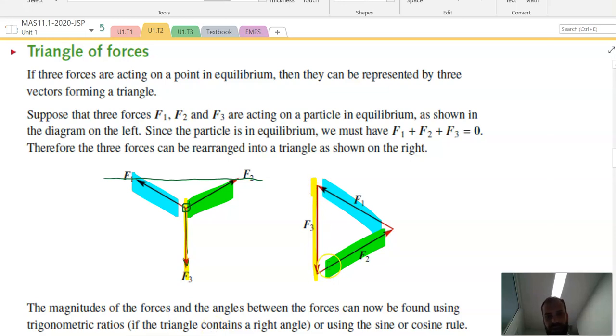Now, if three vectors are in a triangle, then we can say that vector 1 plus vector 2 plus vector 3 equals 0. Or force 1 plus force 2 plus force 3 equals 0. And that's sort of the key to being able to do this.